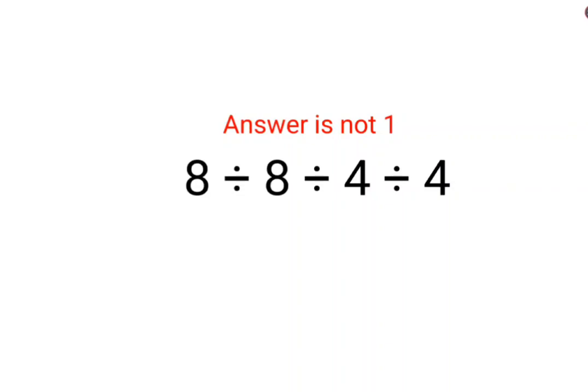Welcome everyone, so we'll understand why the answer for this question is not supposed to be 1. We have 8 divided by 8 divided by 4 divided by 4. At this point, a lot of people think this is so easy, right? 8 divided by 8 is 1, 4 divided by 4 is 1, 1 divided by 1, the answer is 1.